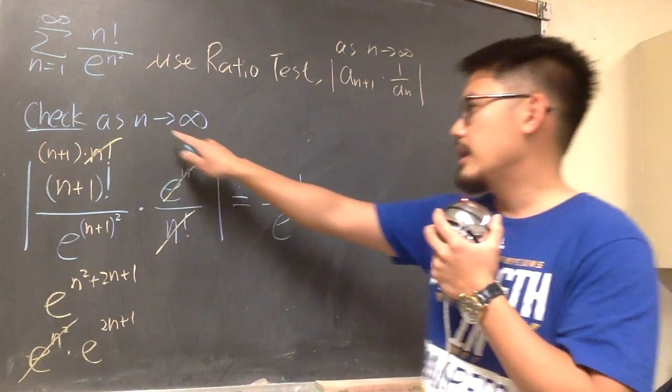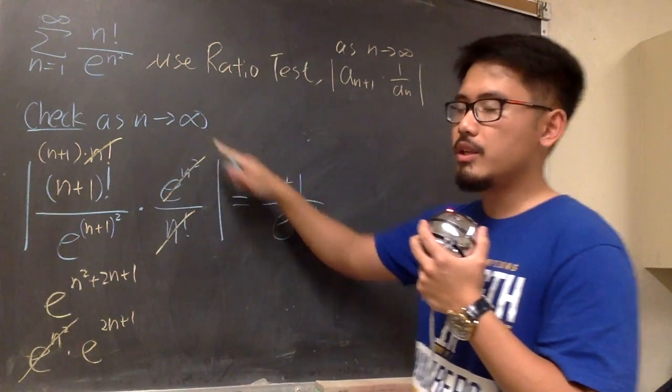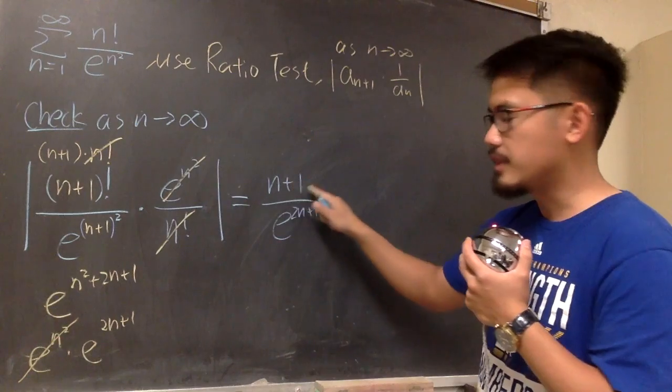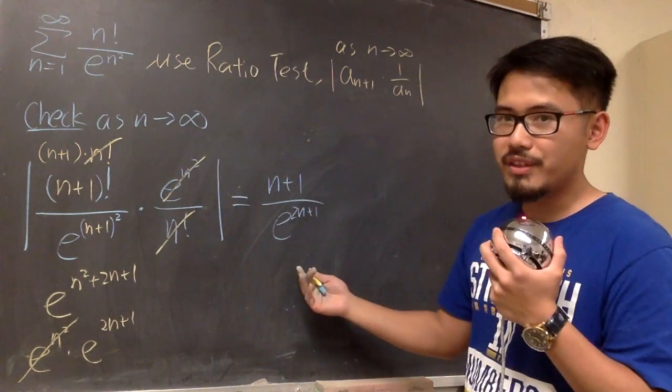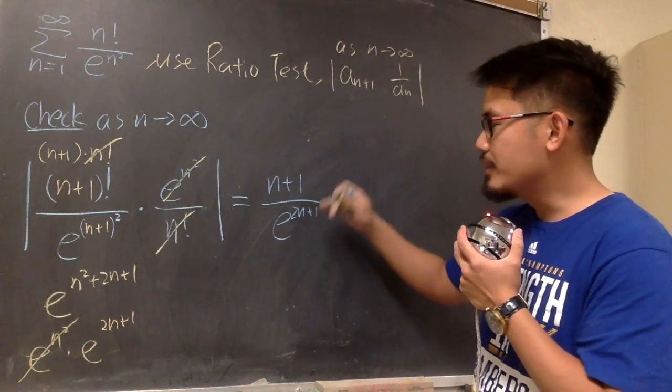And now, as n is approaching to infinity, you see that on the top, it's just infinity. On the bottom, we have e to the infinity, so it's also infinity. This is the infinity over infinity situation.